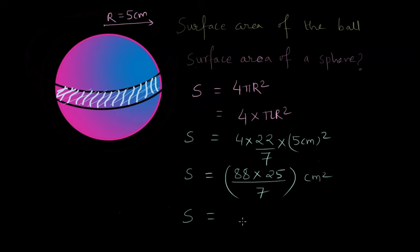It will be 88 times 25 which is 2200 divided by 7 centimeter square which is nothing but 314.28 centimeter square.